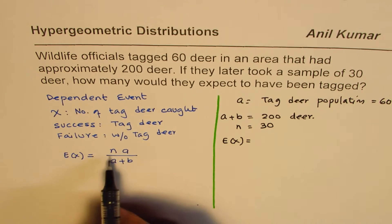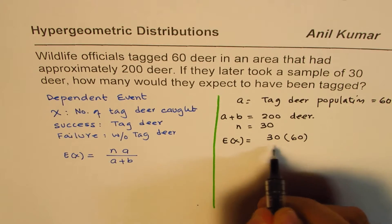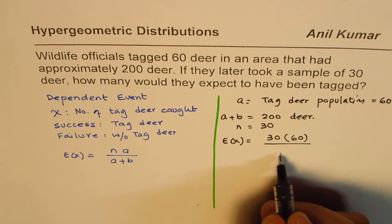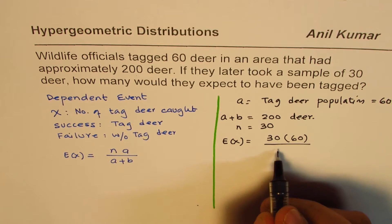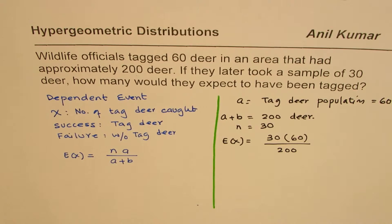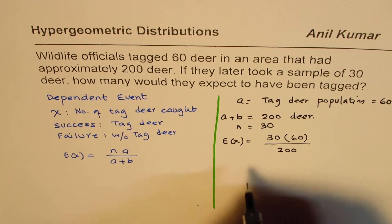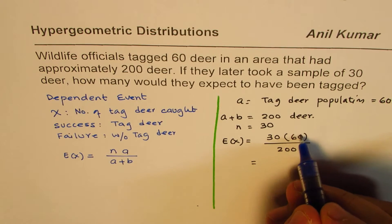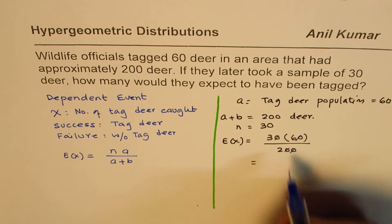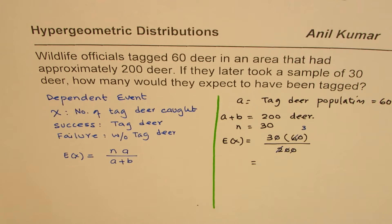So the formula gives us: n is 30, times the tagged population of 60, divided by the total population A plus B, which is 200. We can simplify this — canceling the two zeros, 60 over 200 reduces, and two goes into six three times — so we are left with nine.